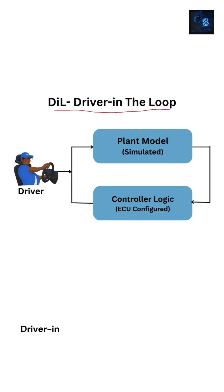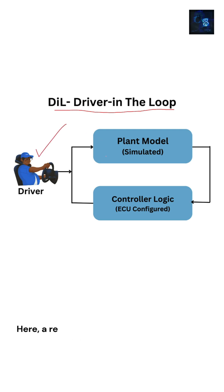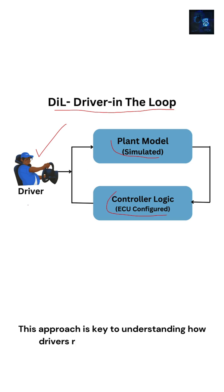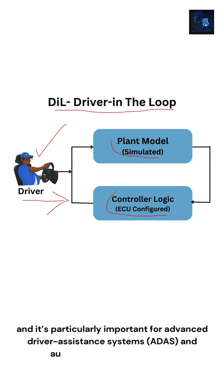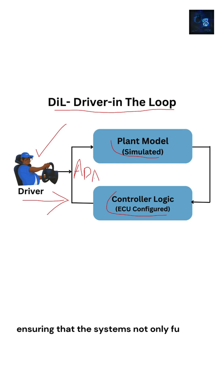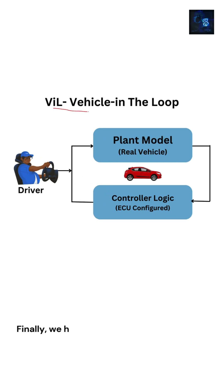Driver in the Loop, or DIL, introduces the human element into the testing process. Here, a real driver interacts with a simulator that incorporates both the plant model and controller. This approach is key to understanding how drivers respond to various driving conditions, and it's particularly important for Advanced Driver Assistance Systems (ADAS) and autonomous vehicle testing. DIL helps engineers evaluate human-machine interaction, ensuring that systems not only function correctly but also provide an intuitive and safe driving experience.